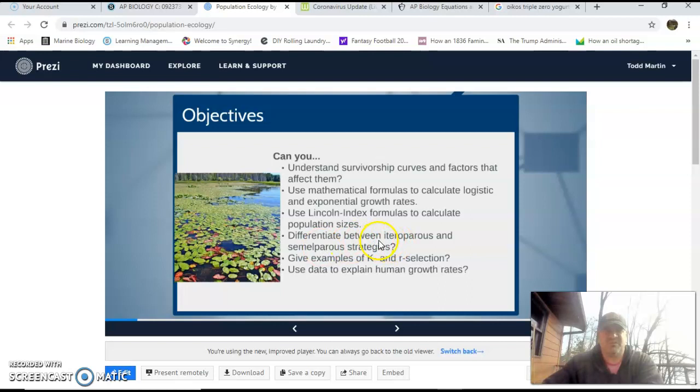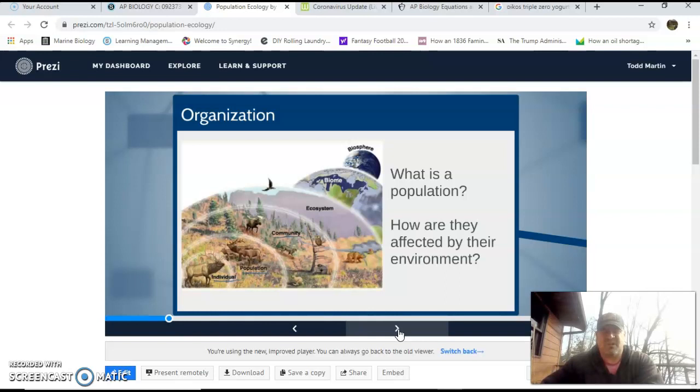We're going to skip Lincoln Index. We're going to talk about these two terms just to make sure that those two terms are in there, and we're going to also talk about the difference between K and R selection because that seems to be every year something that they love to talk about just to see if anybody covered it. Again, with the shortened version this year, who knows, but I'm going to do it anyway, and that should about do it. So let's get to it.